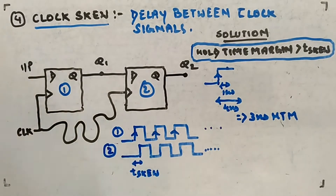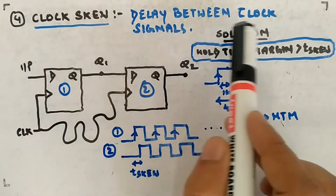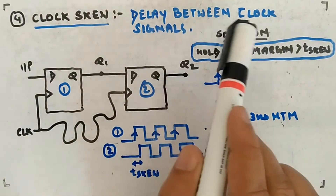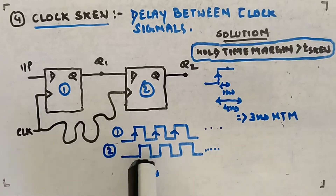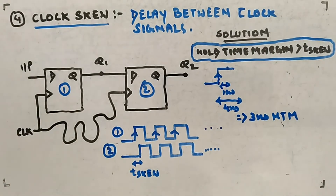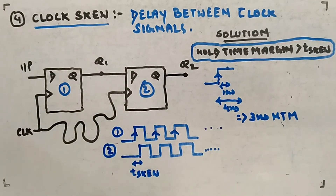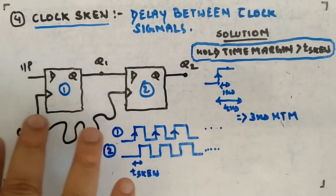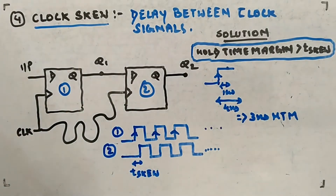You can see the skew — skew means the difference between the delays, the delay between the clock signals. There is a small delay between the first clock signal and the second clock signal. That is called t_skew, represented by how much time it is delayed.